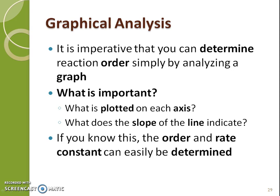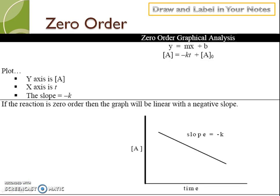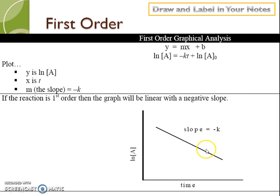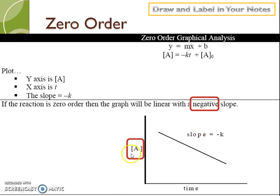Now let's look at how you can look at a graph and determine what order a reaction is. The important things to look at are what is plotted on the axis and what does the slope look like — positive or negative. For zero order: if you have regular concentration on the y-axis and a negative slope, that's a zero-order reaction for the concentration of A.